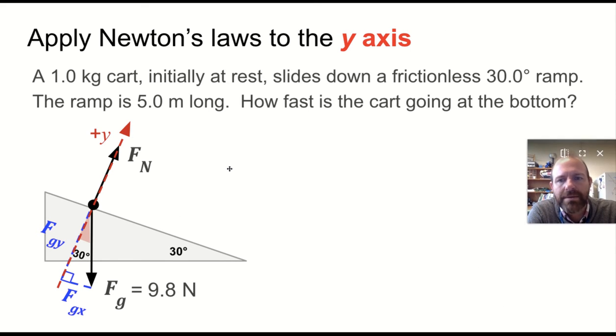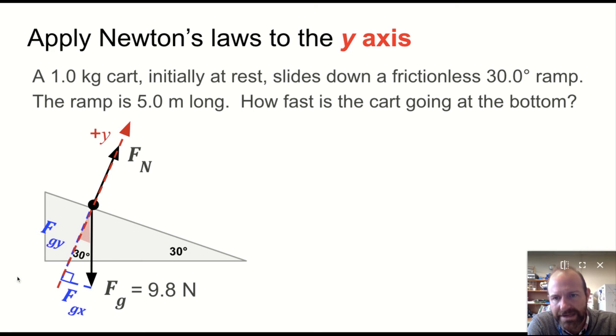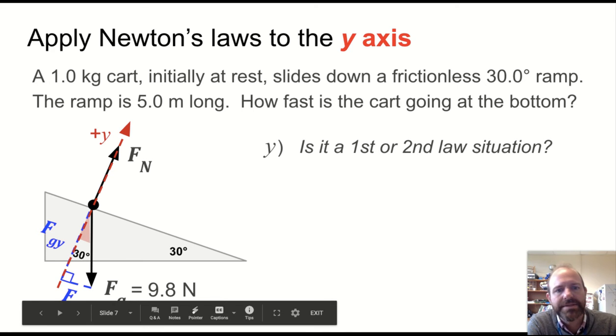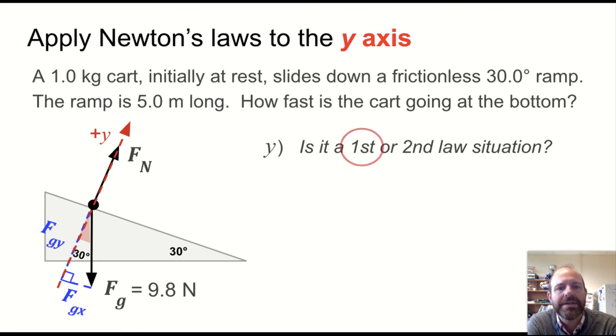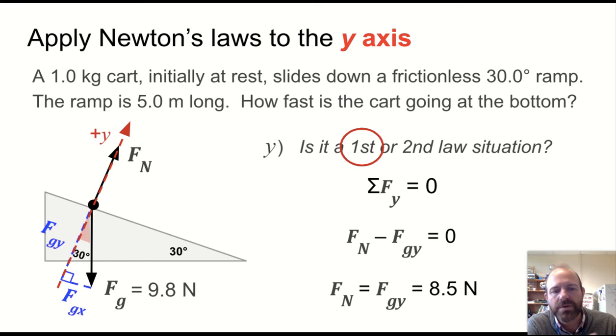So now we're going to go ahead and apply Newton's laws to the y-axis. Is it a first or second law situation? Well, perpendicular to the ramp, it's a first law situation because the cart is not going along the y direction. It's only going in the x, which means the net force in the y is 0. Normal force minus the force of gravity in the y equals 0, which means those two are equal to each other and equal to about 8.5 newtons. It's slightly different if you used 10 for little g.